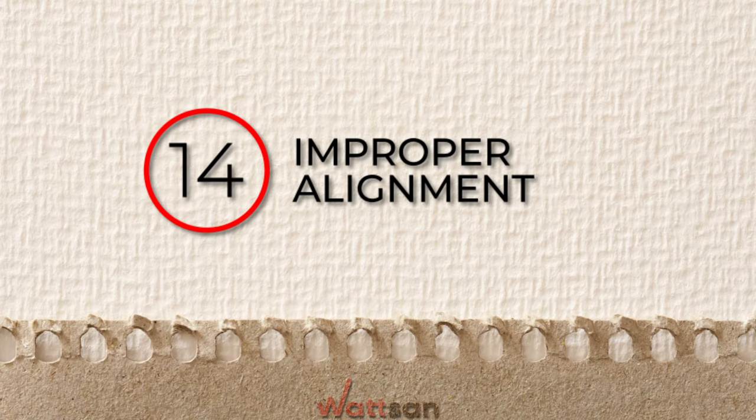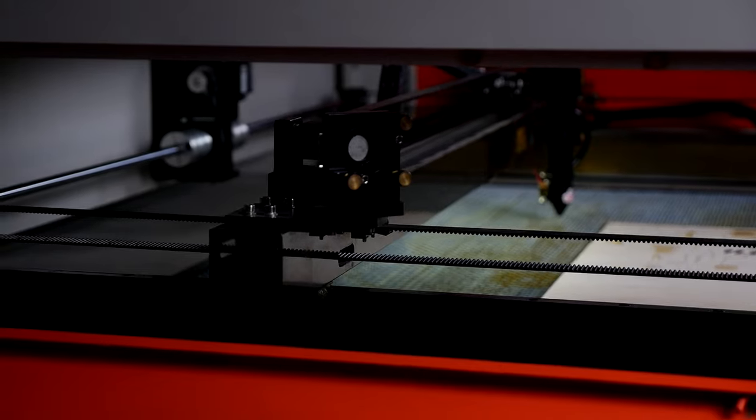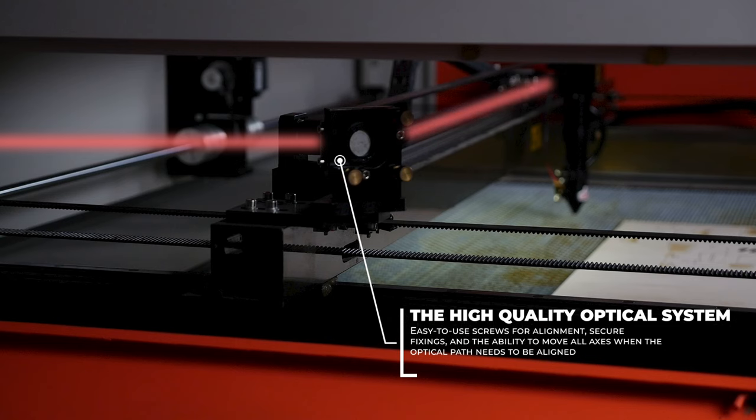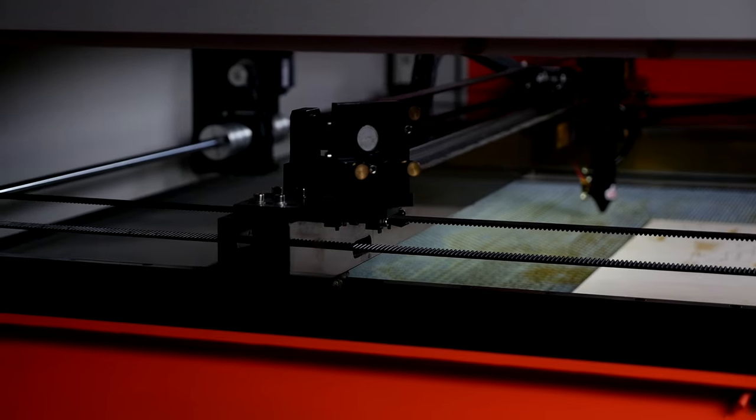14. Improper alignment. Alignment is the adjustment of the position of the mirrors to ensure the correct beam transfer from the emitter to the material. This is one of the most important aspects.